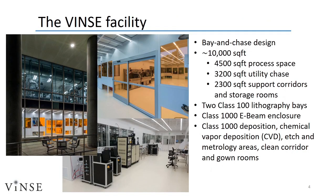Our facility is about 10,000 square feet in a bay and chase design. This means that the process bays, where users conduct most of their work, are kept clean. Tools that service the process bays, such as pumps and chillers, are kept in the service chases that run along the walls of the bay. About half of our space is maintained as process space, while the other half serves as the utility chase as well as for storage.